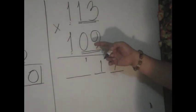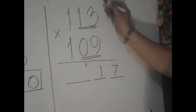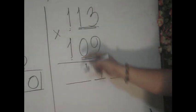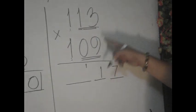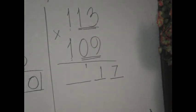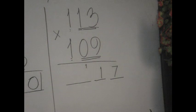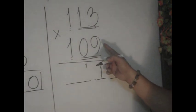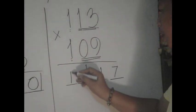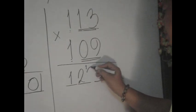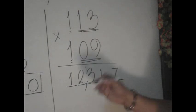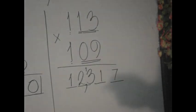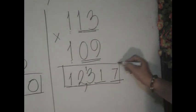As I said, you have to add this with the whole multiplication here. So 113 plus 9 will give you 122, plus the carry 1 will give you 123. And therefore, the answer here is 12,317. That will serve as our answer.